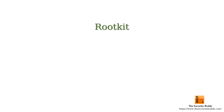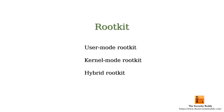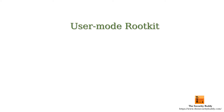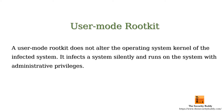There are 4 different types of rootkits: user mode rootkit, kernel mode rootkit, hybrid rootkit, and firmware rootkit. A user mode rootkit does not alter the operating system kernel of the infected system. It infects a system silently and runs with administrative privileges. It can alter the security configuration of the system and launch itself at the time of system start.